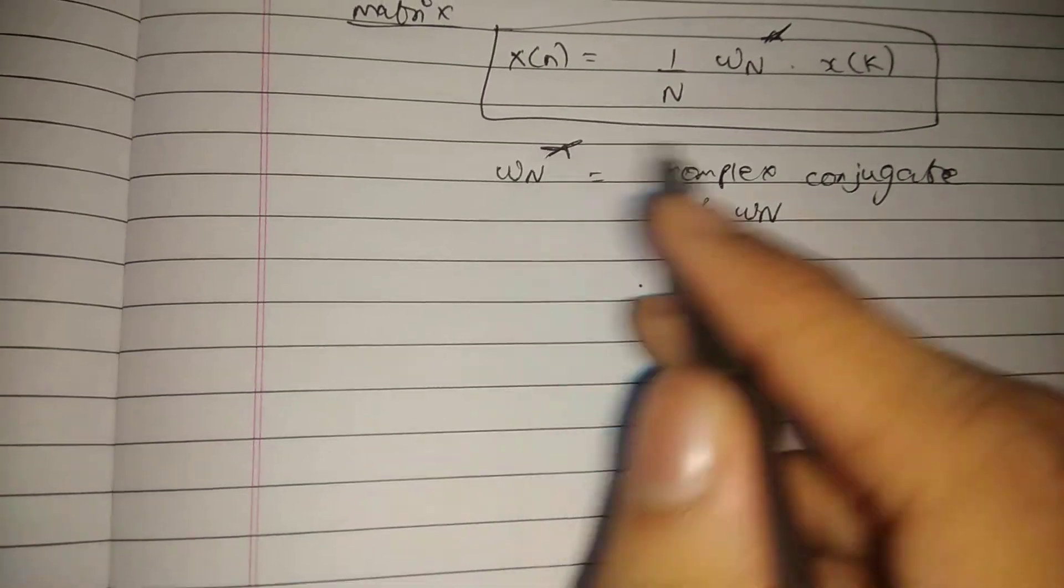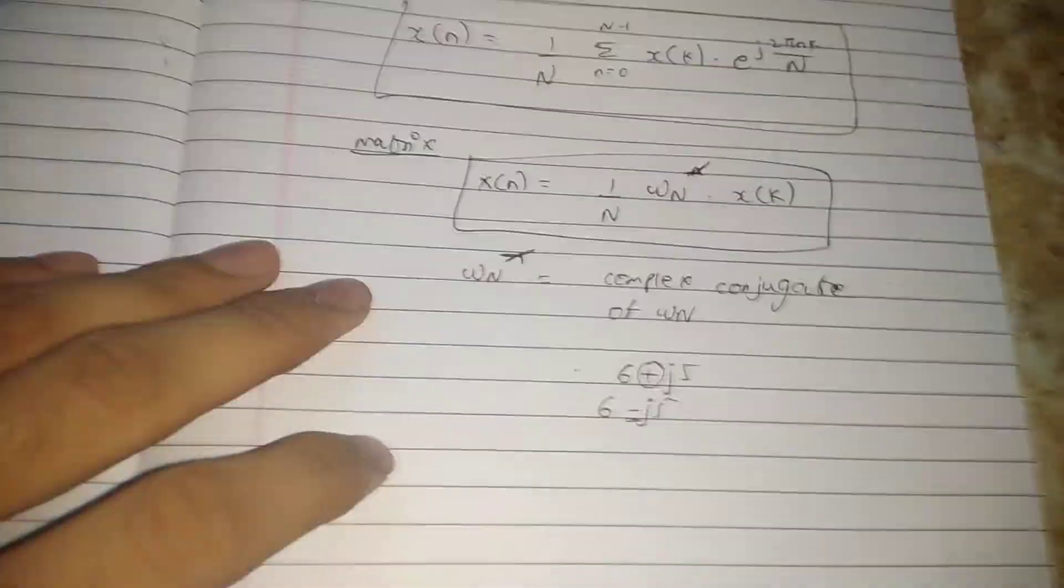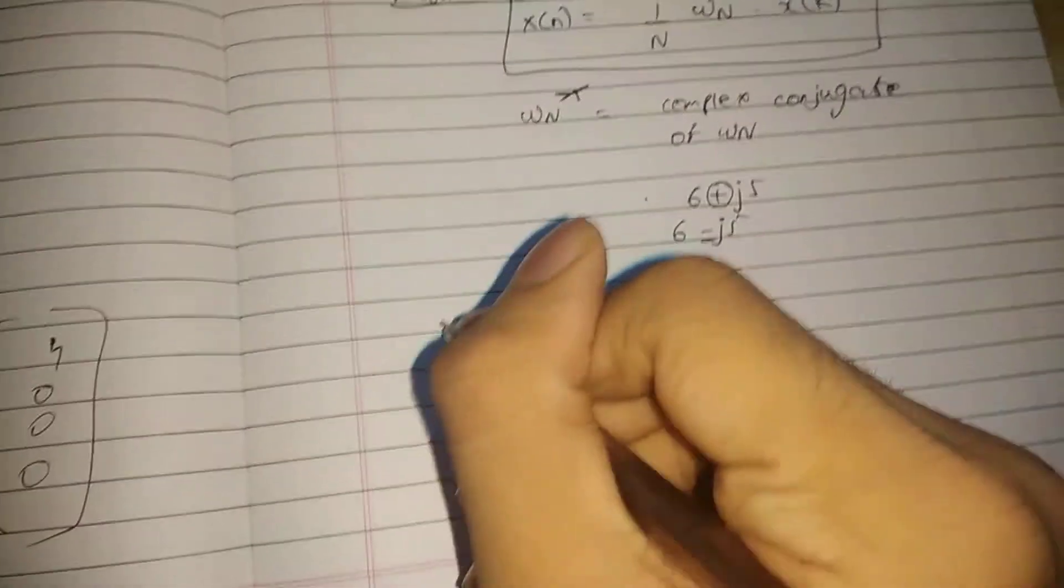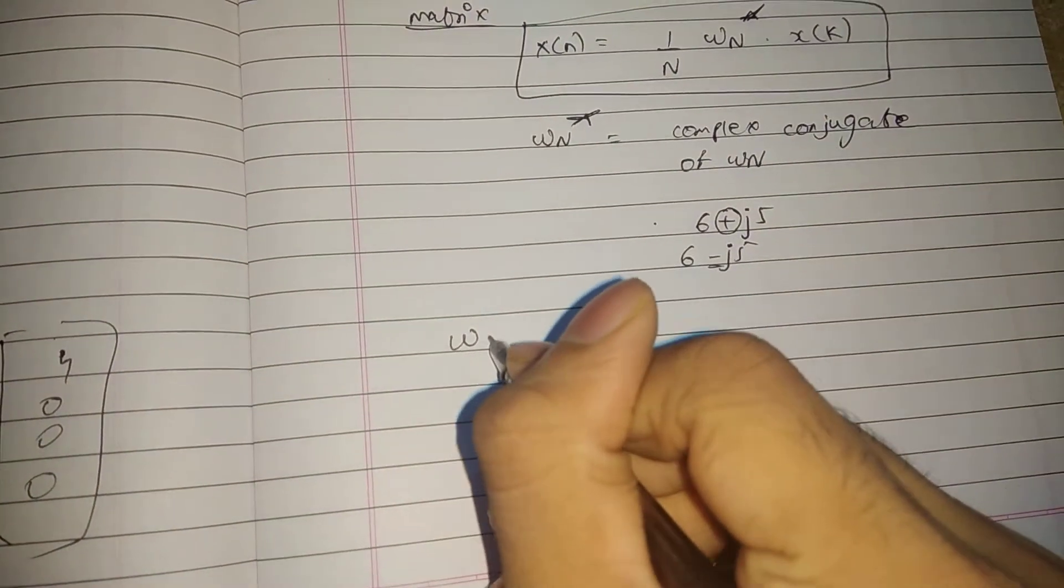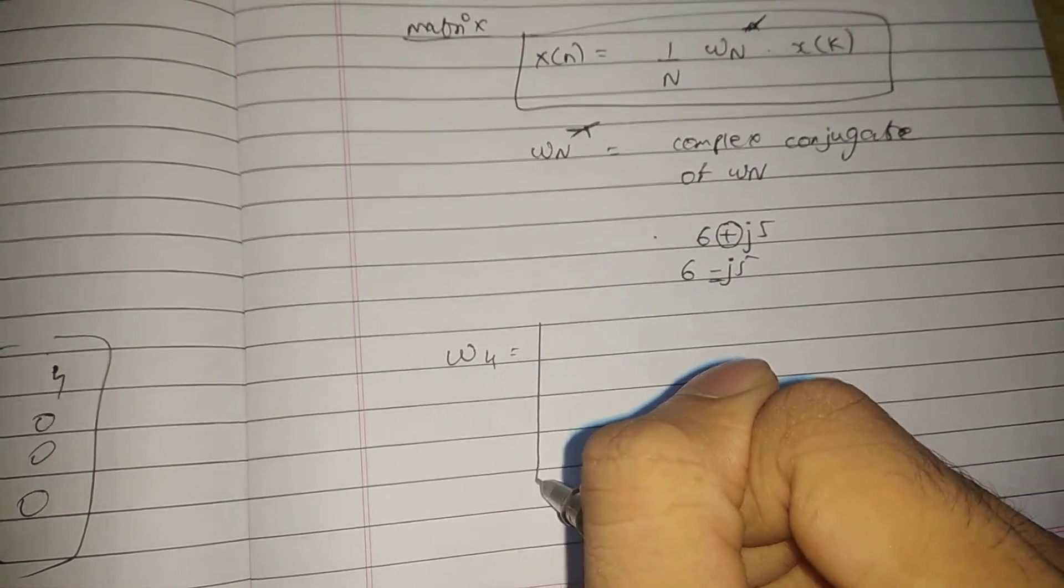For the twiddle factor, let me show you an example. The twiddle factor omega 4.